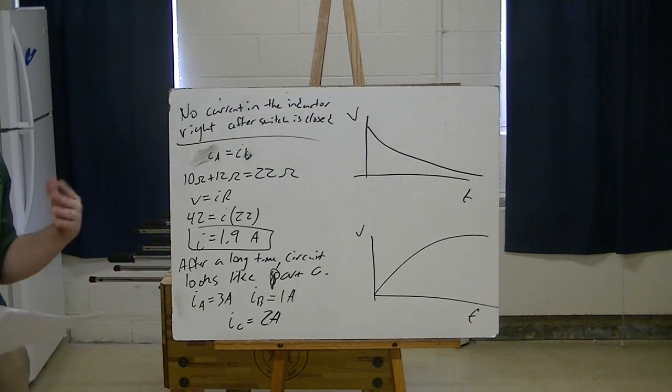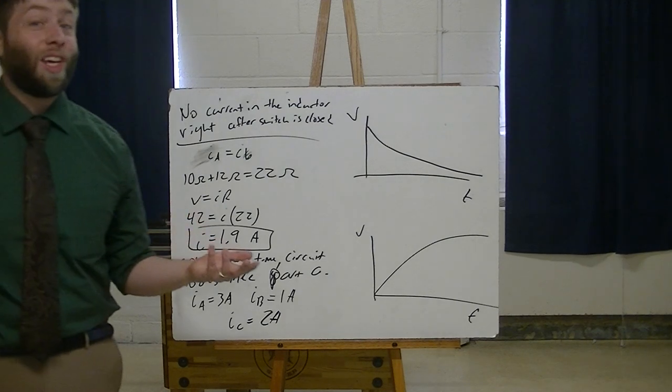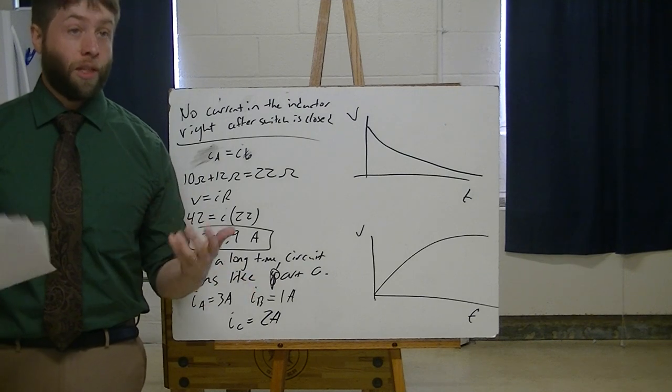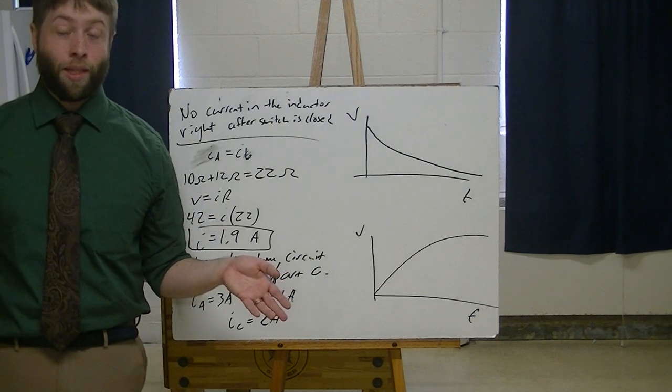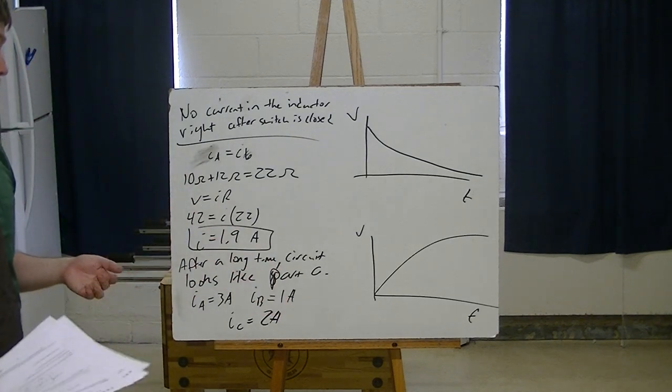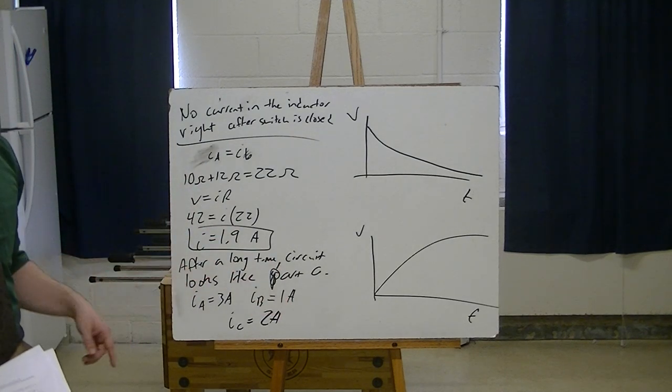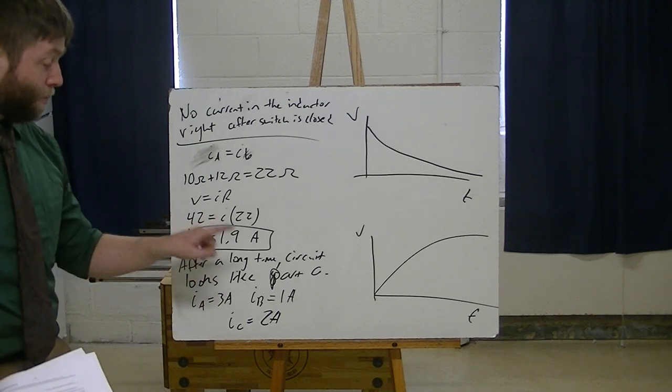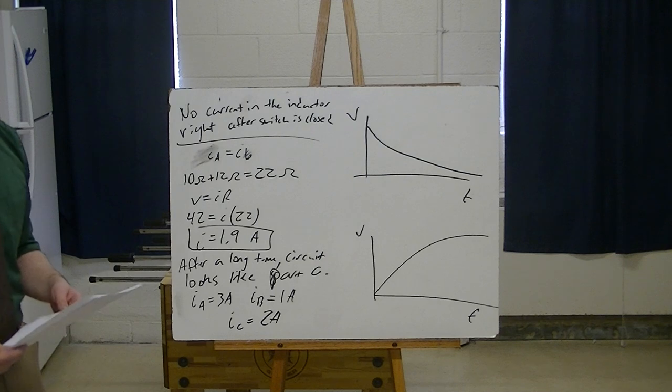A long time afterward, then the current is just going to level out. The inductor is like it's not even there anymore. So after a long period of time, the inductor is just not even thought of as being there. So now it goes back to being the original problem from before. And we figured out those currents before. Look at the previous whiteboard, if you don't remember. Ia was 3 amps, Ib was 1 amp, and Ic was 2 amps.